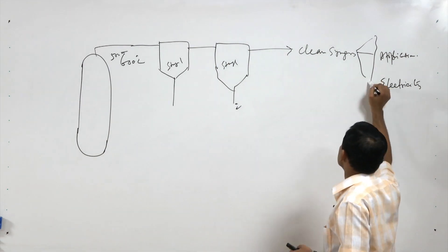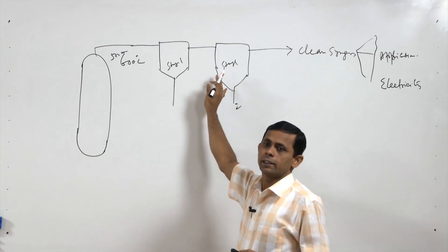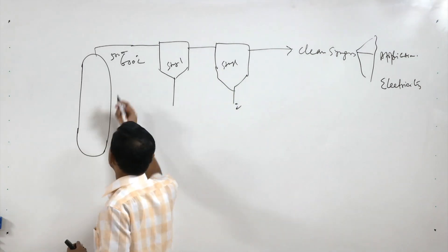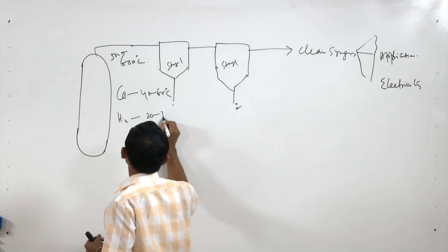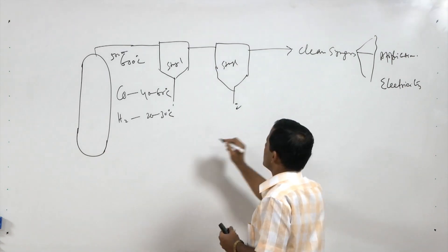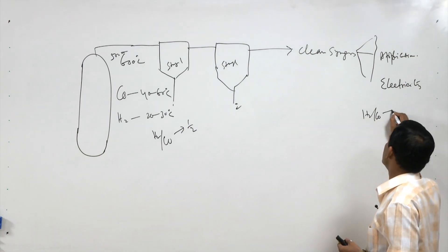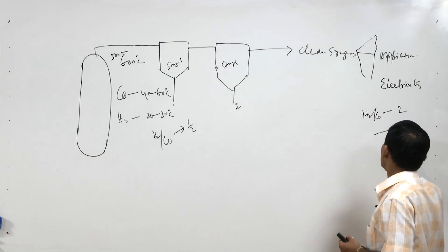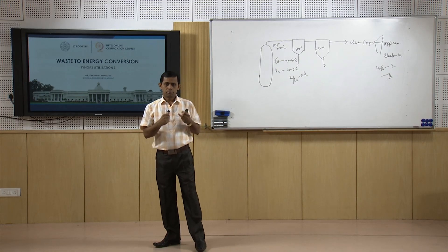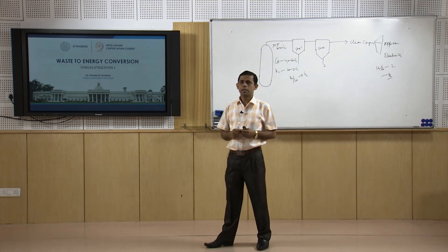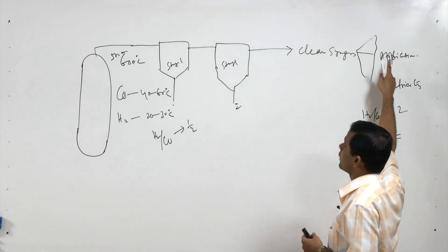Once we discuss this utilization part, we should first concentrate on the cooling and cleanup options. An important point is that typical syngas composition has CO at 40 to 60 percent and H2 at 20 to 30 percent. But we need somewhere an H2/CO ratio of 2, or in some cases completely hydrogen. Therefore, we need to cool the syngas, remove the impurities, and control the H2/CO ratio before going for different applications.